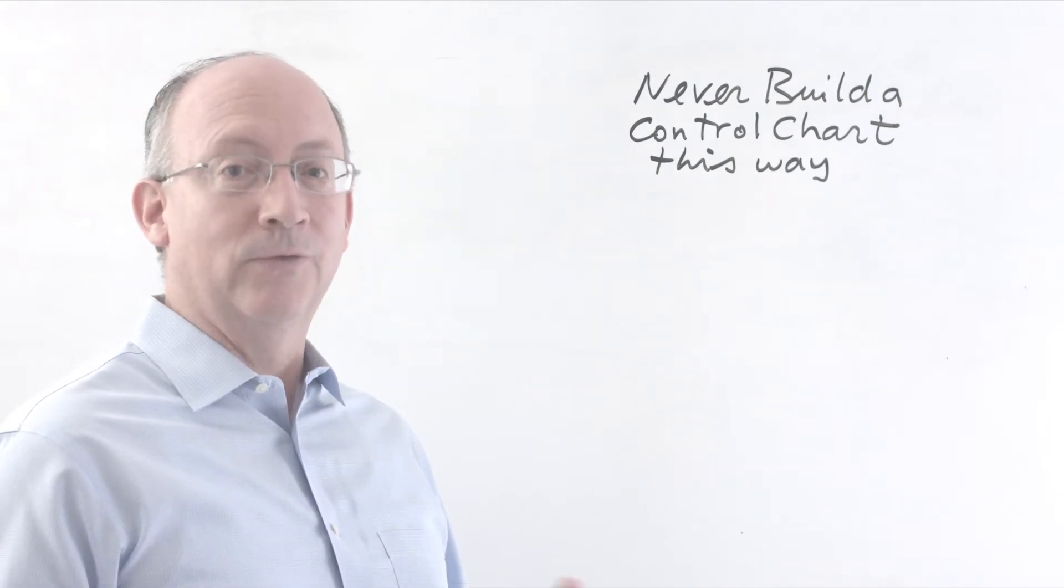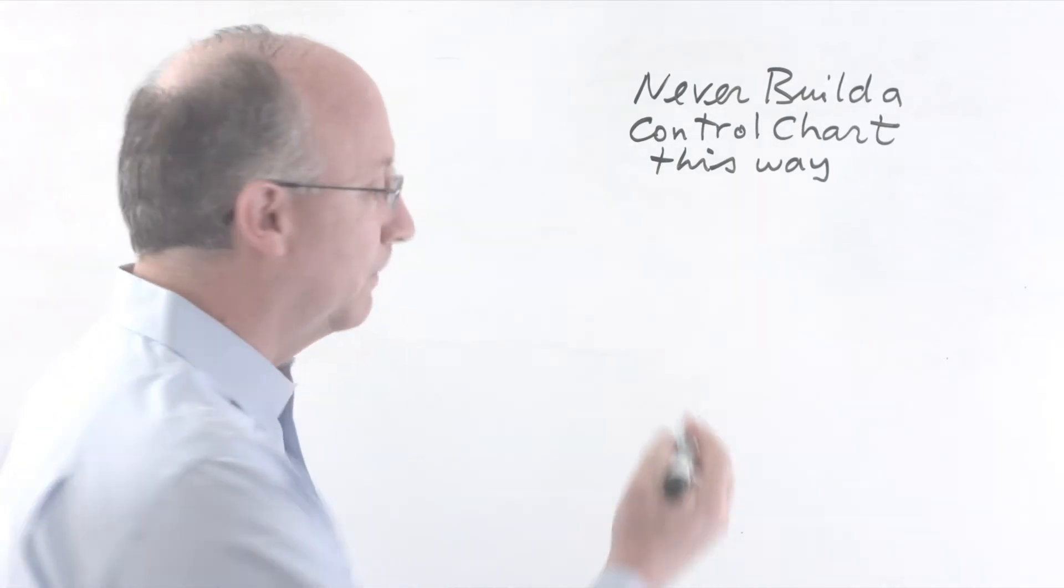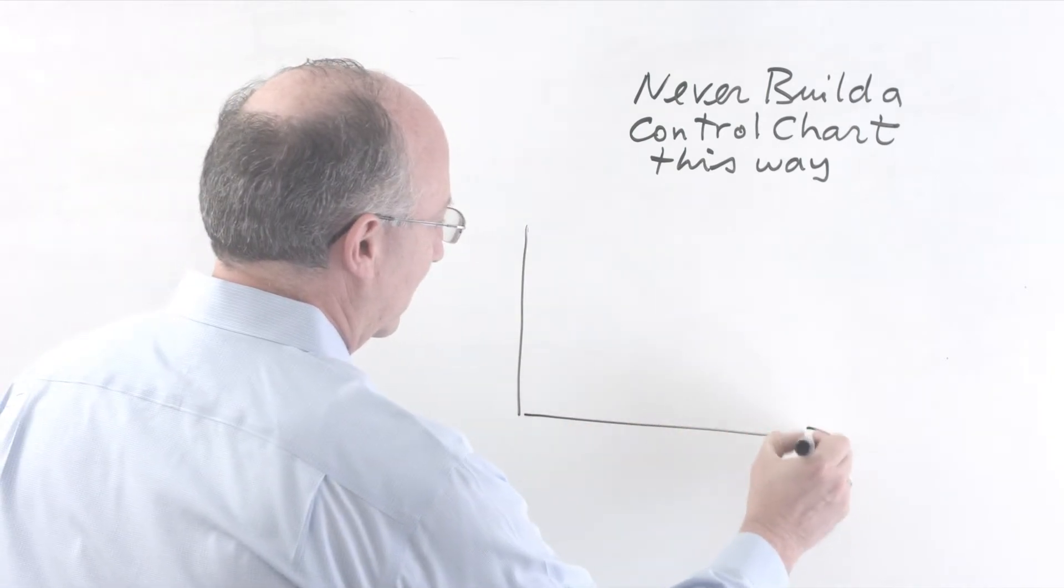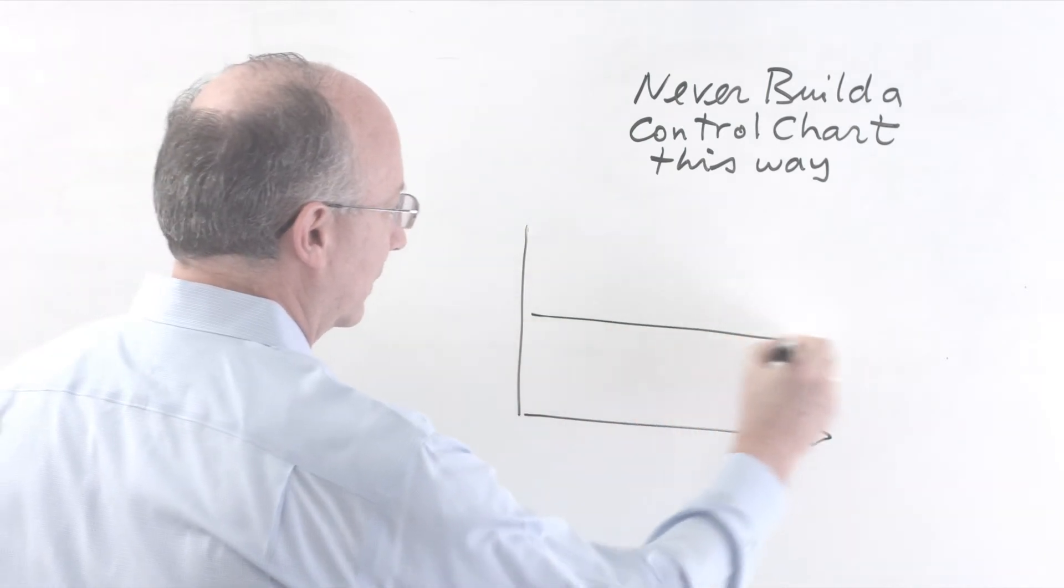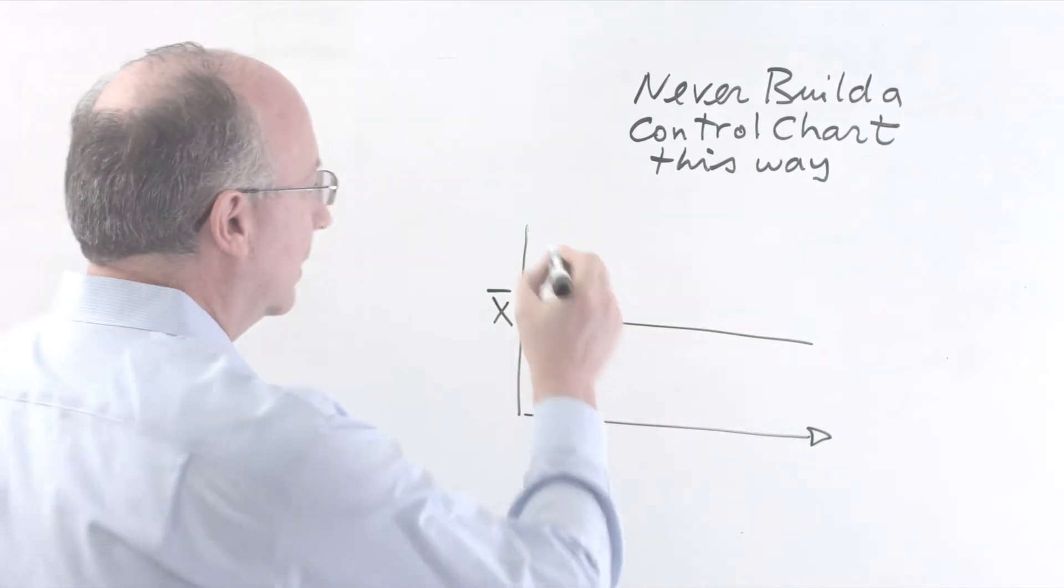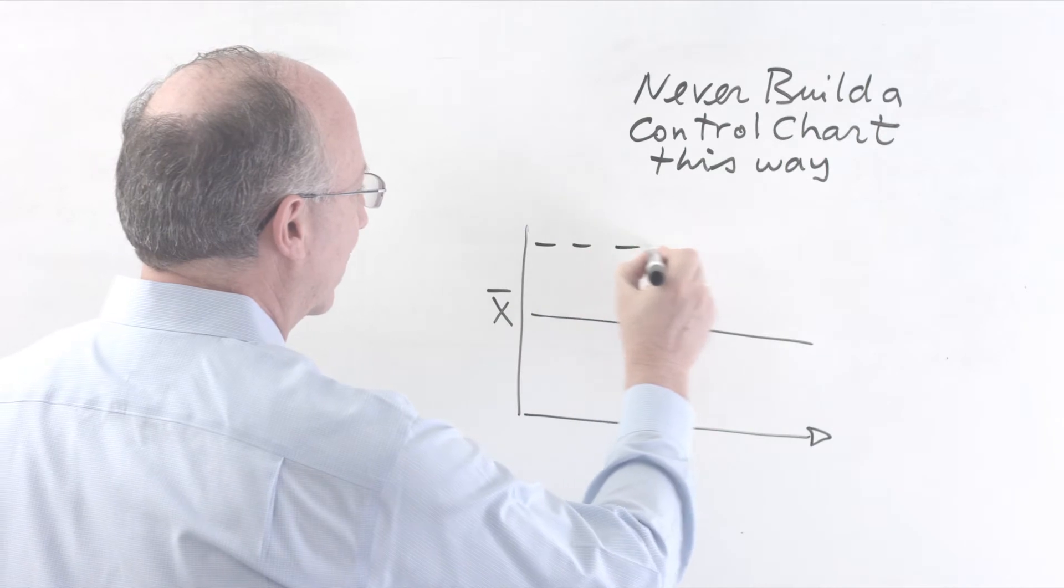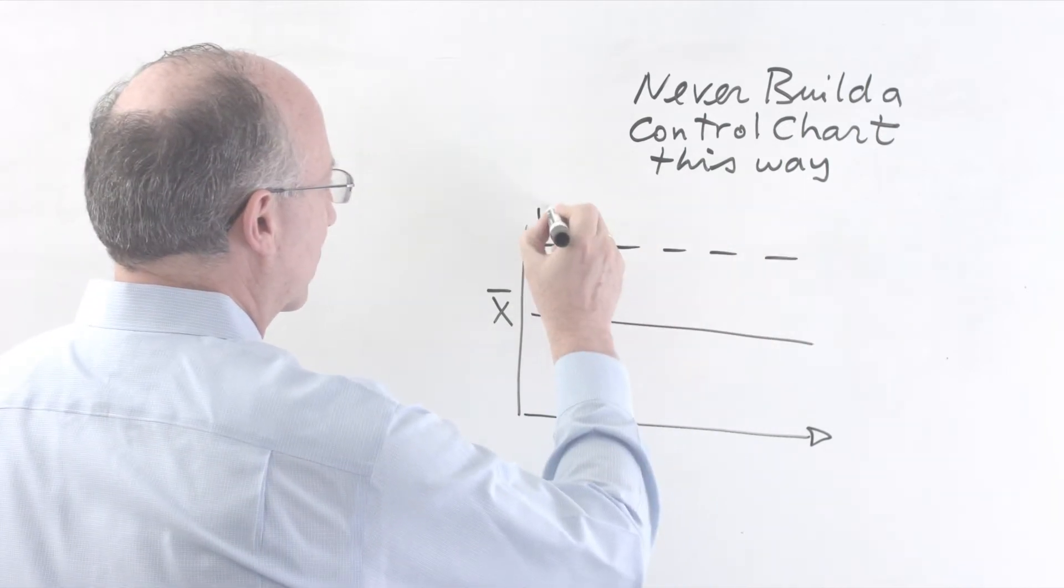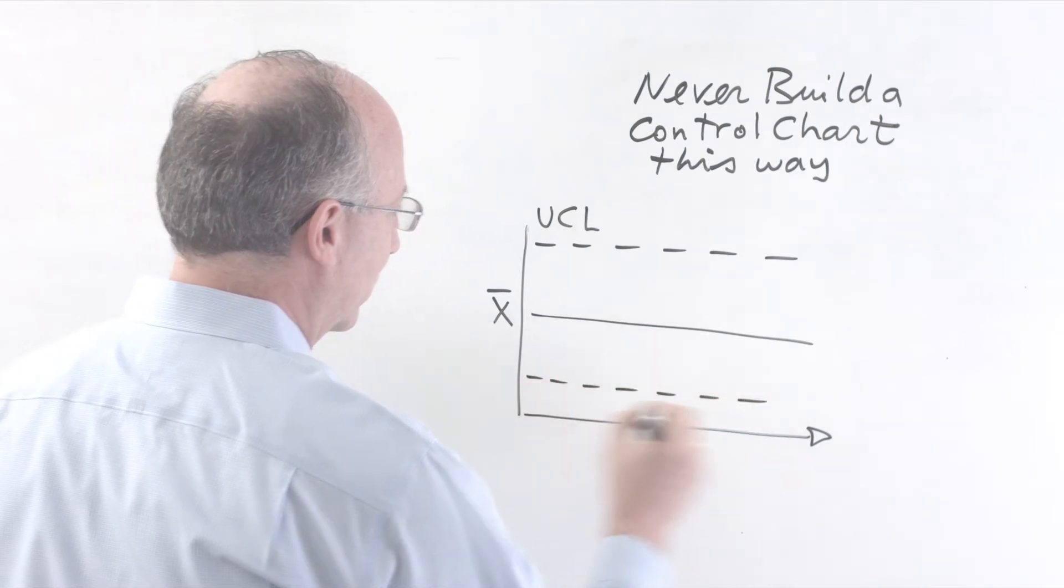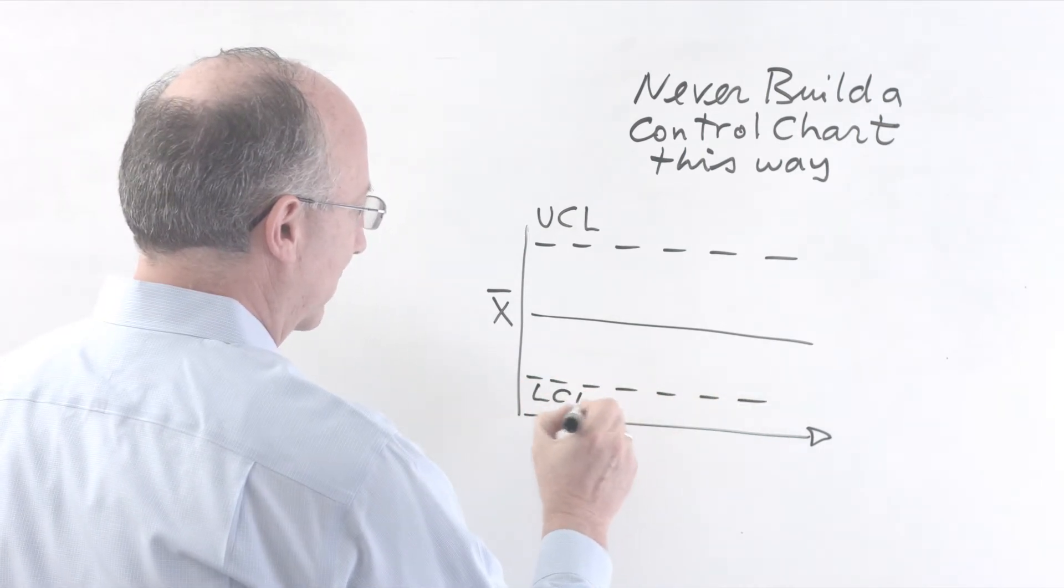Control charts are made of three lines. These lines are the line of averages, which we typically denote with an X and a bar, and then two limits: the upper control limit and at the same distance the lower control limit.